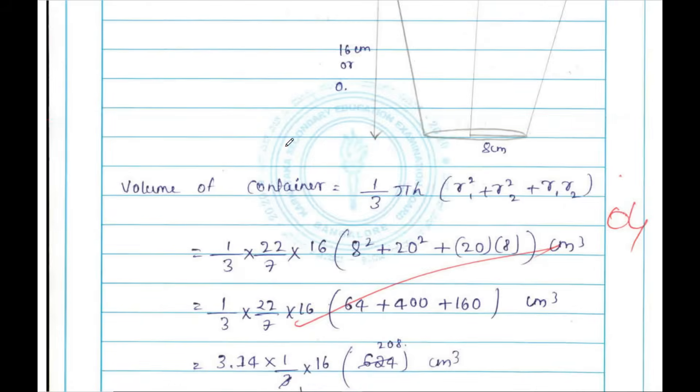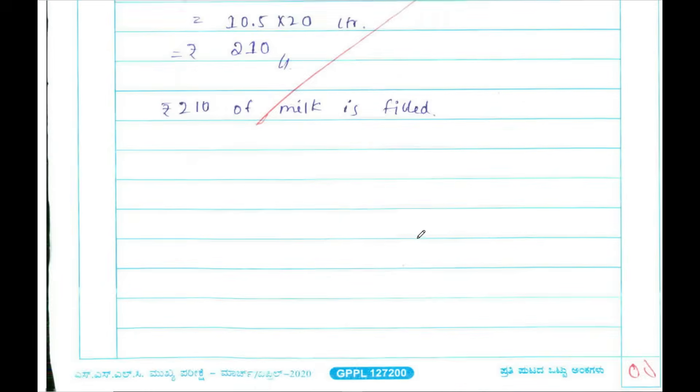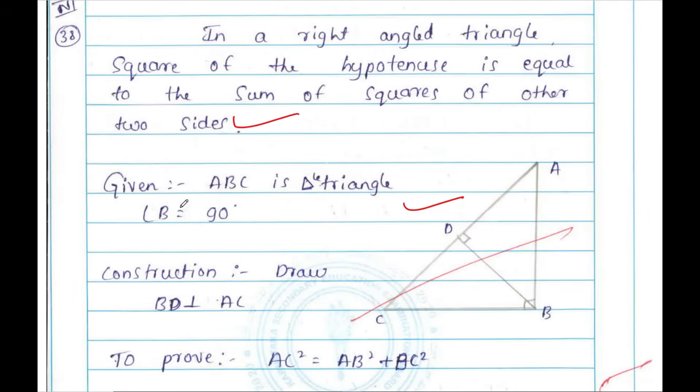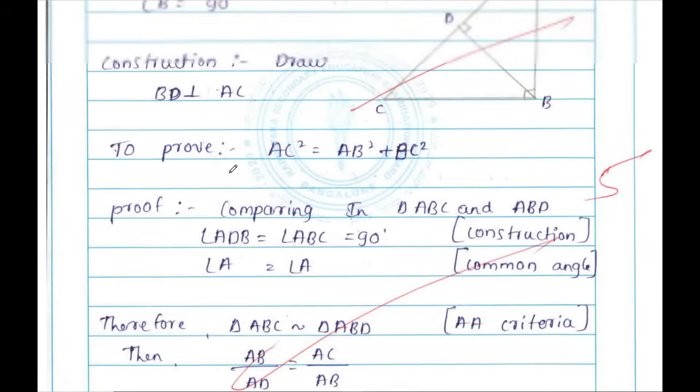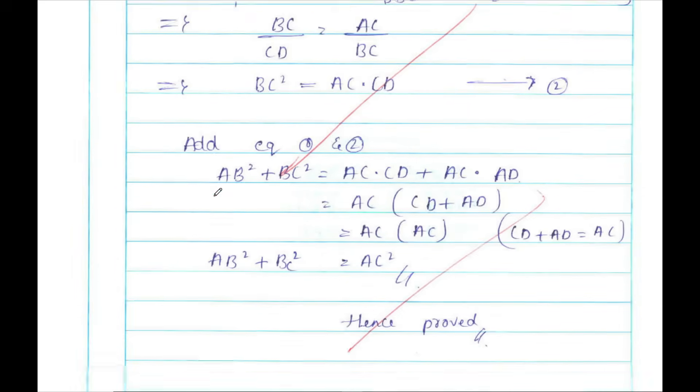See, I told you for surface areas and volumes, the figure is written, then the formula, then substitution. For theorem, first the statement, then the figure, then the given data, construction, to prove, and proof has been written neatly, students.